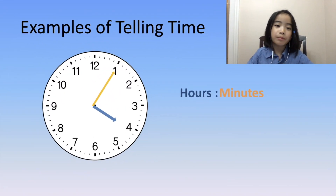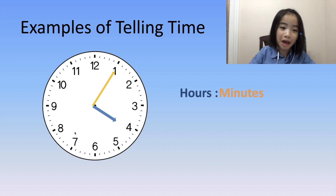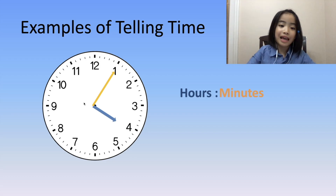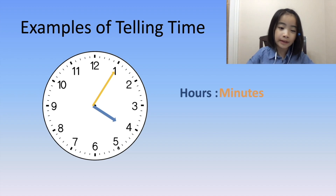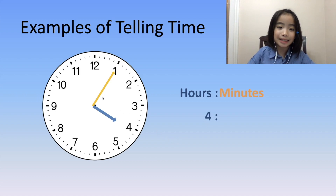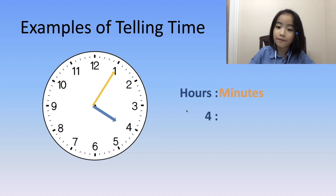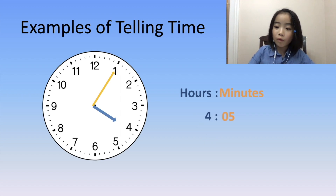Now, let's do a couple of examples of telling time. Here is our analog clock. First, let's look at the hour hand. The hour hand is pointing between 4 and 5. According to the rule, it's 4 o'clock. Now, let's look at the minute hand. The minute hand is pointing to the 1, which is 5 minutes. So the clock is showing 4:05.